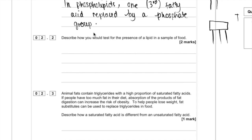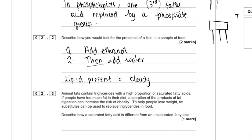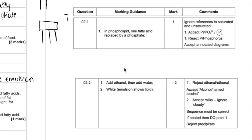In the next part, describe how you would test for the presence of a lipid in a sample of food. So this should be fairly straightforward. It's just the emulsion test. Let's have a look at the mark scheme for that. Really important here is that you get them the right way round. They won't let you have them if they're in the incorrect sequence.